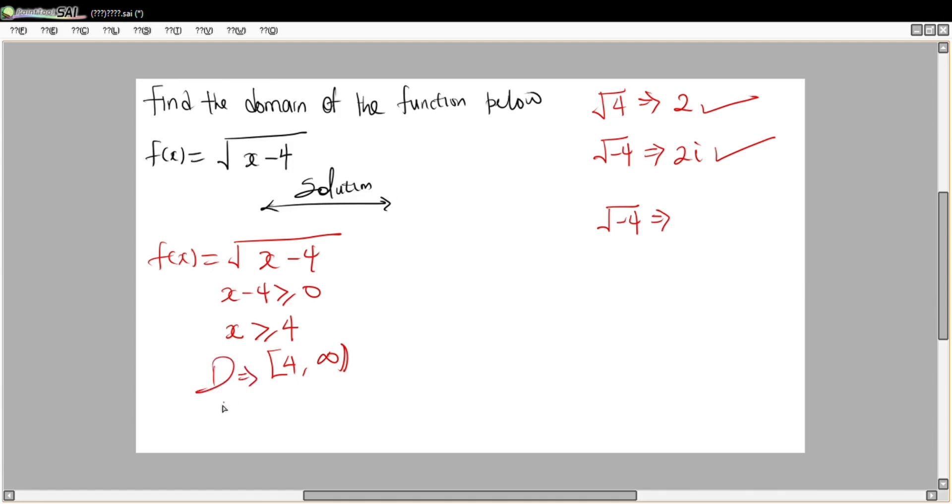Now, this implies that if you pick a number from 4 to infinity, this function will be defined. But if we pick any number less than 4, let's try 2. Two minus 4 will give us minus 2, and I told you that this particular function must be defined on real numbers. That is the end of the video. Thank you so much.